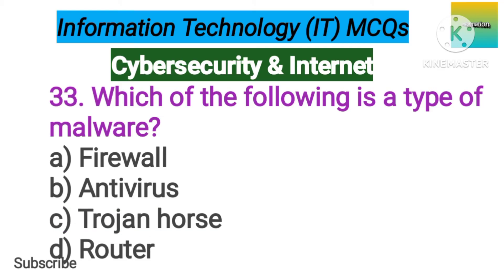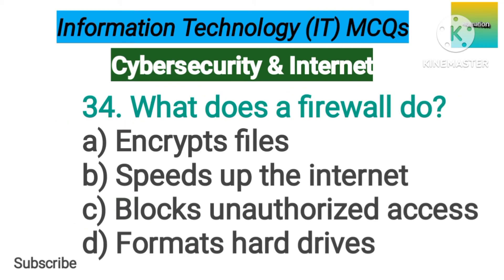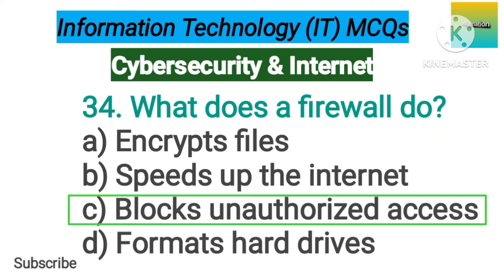Number 34. What does a firewall do? Option A: Encrypts files. B: Speeds up the internet. C: Blocks unauthorized access. D: Formats hard drives. The correct answer is option C, blocks unauthorized access.